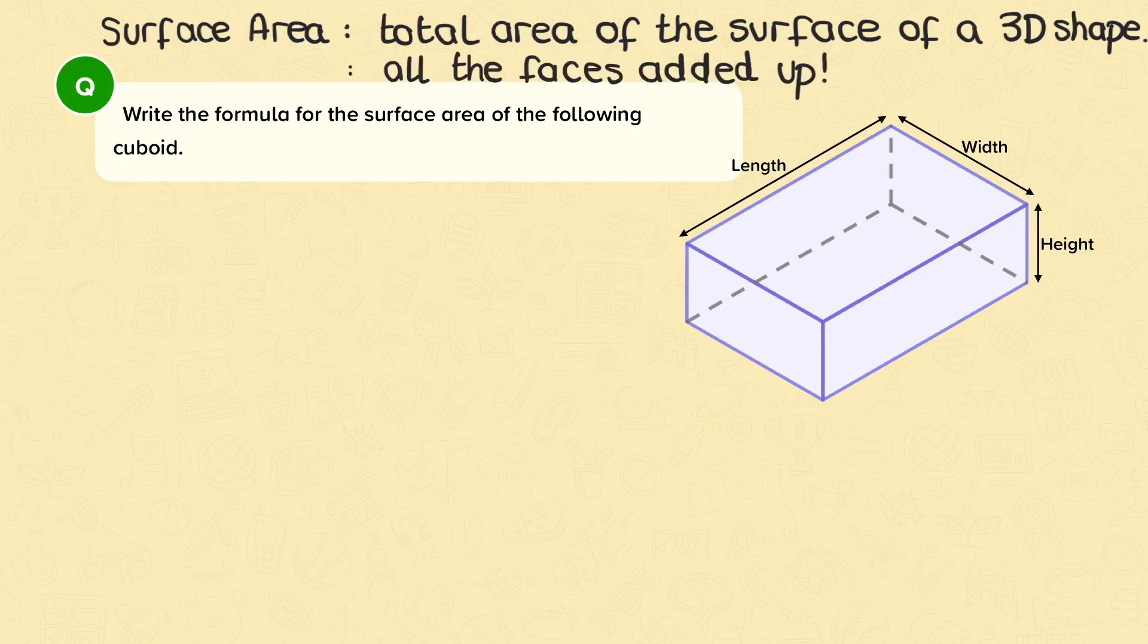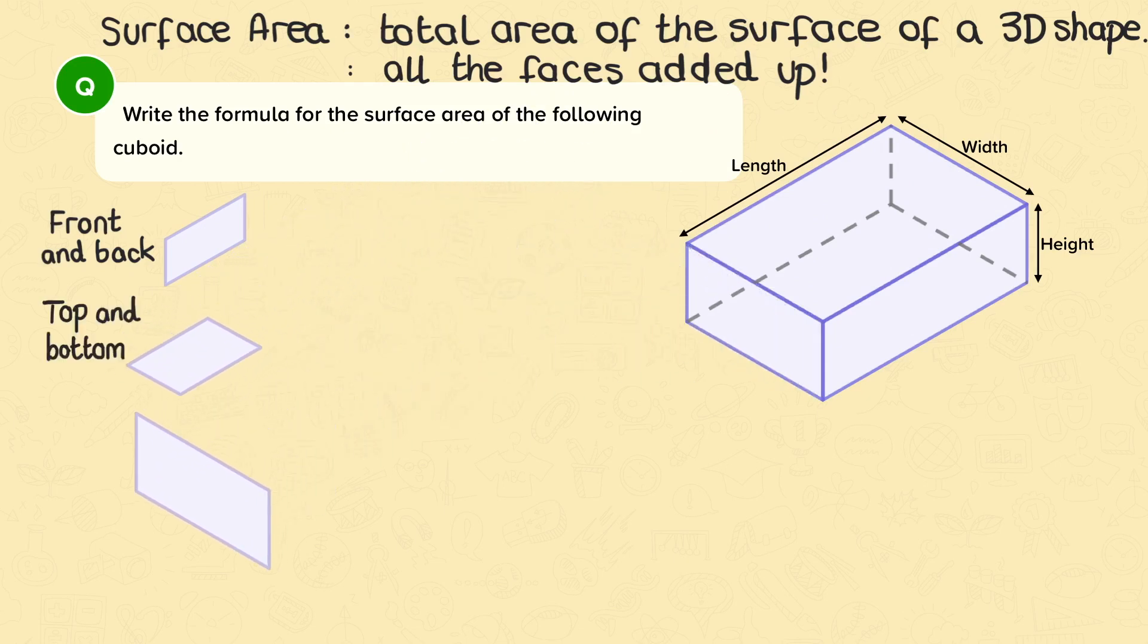To find the formula of the surface area of this cuboid, we need to add up all six faces. We know that the faces come in pairs. The front and the back have the same sized face, the top and the bottom have the same sized face, and the two sides have the same sized face.